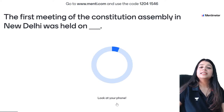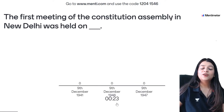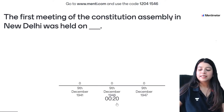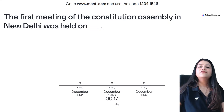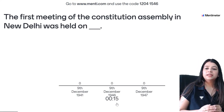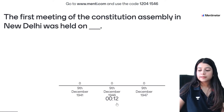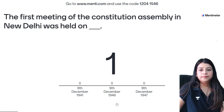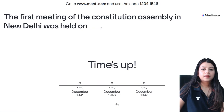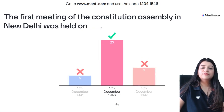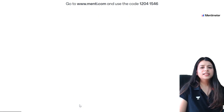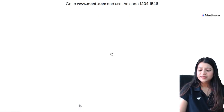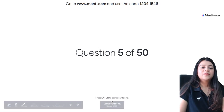The first meeting of the Constitution Assembly in New Delhi was held on — 23 of you answered correctly, and the answer is B — December 9th, 1946.